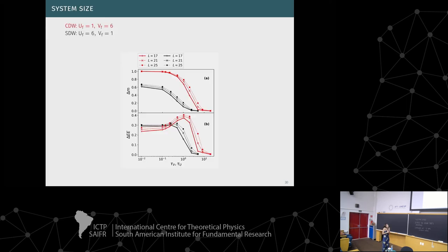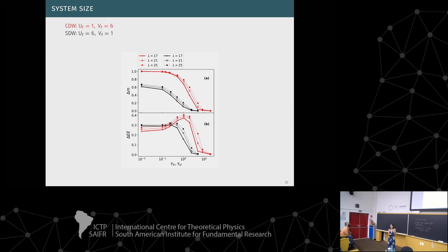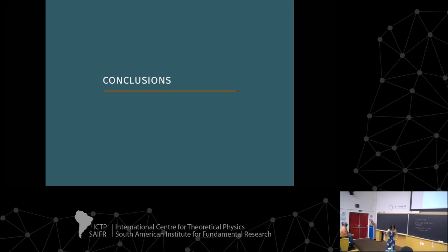I also show results for different system sizes — slightly larger than the 17-site system. These curves are similar to the previous ones, but the different curves correspond to different sizes rather than different paths. We selected one path for the CDW quench and one for the SDW quench. We observe that the adiabatic regime is reached for larger times as we increase the system size, as expected. But the main differences between the two quenches remain the same.